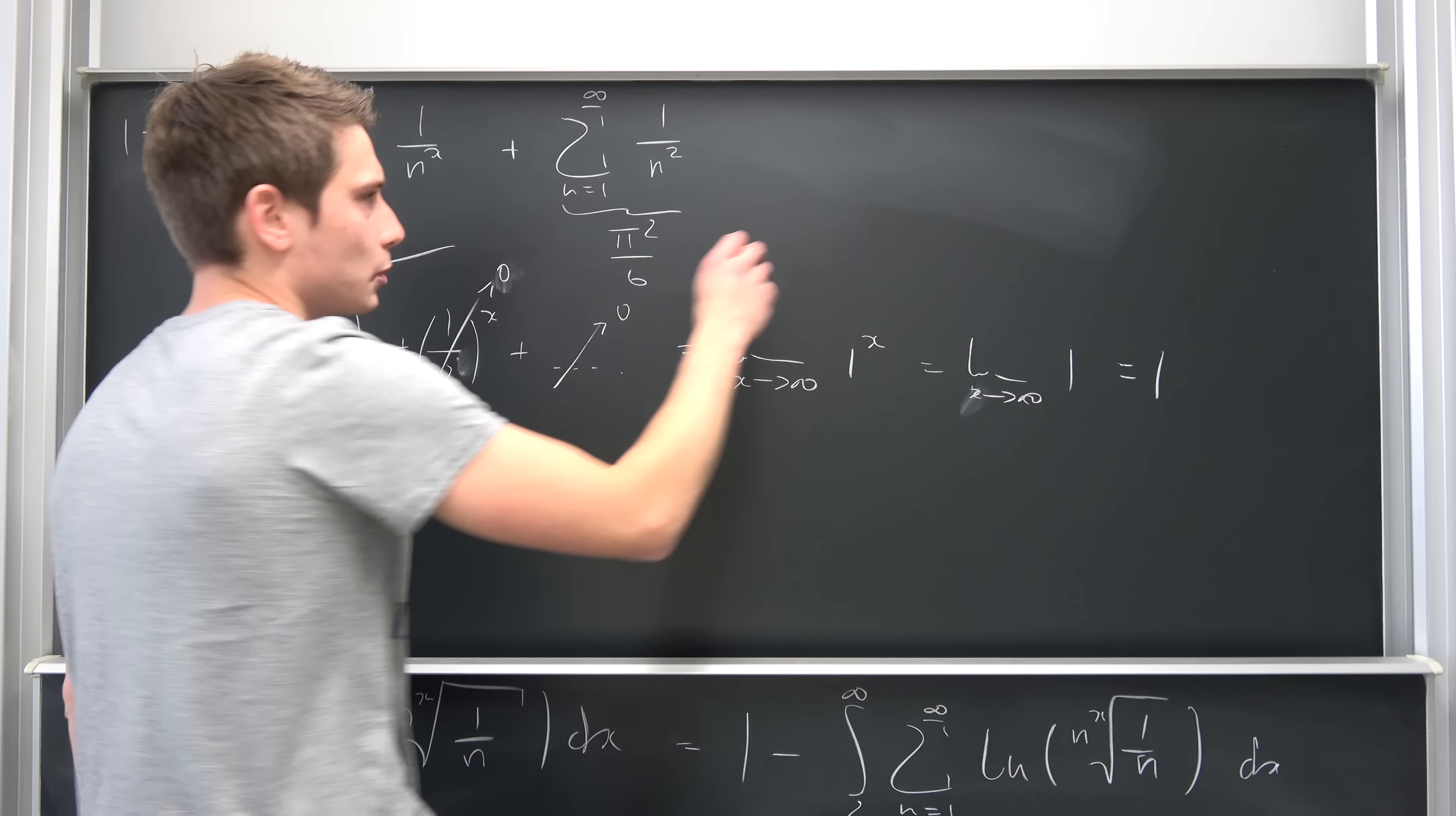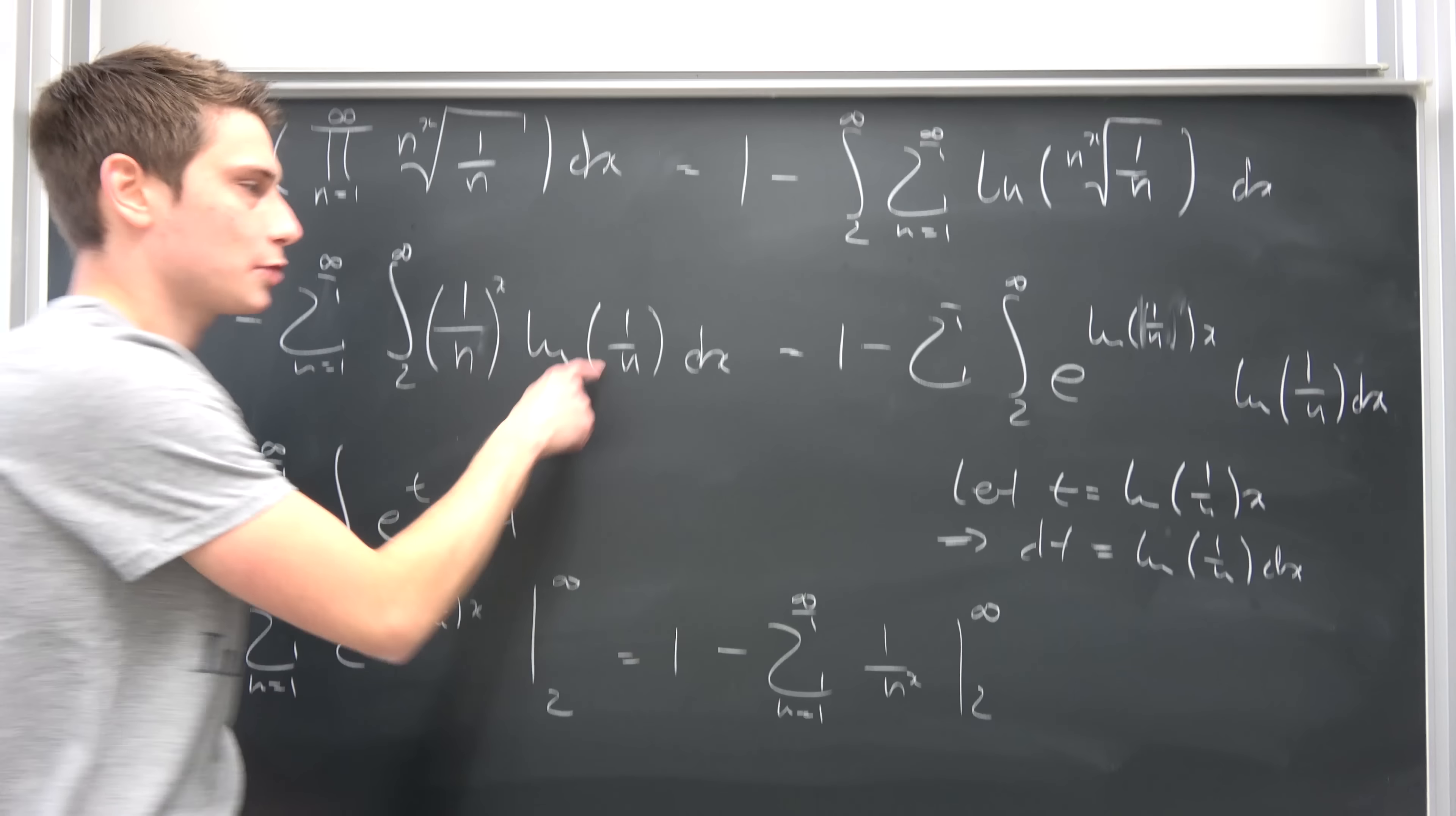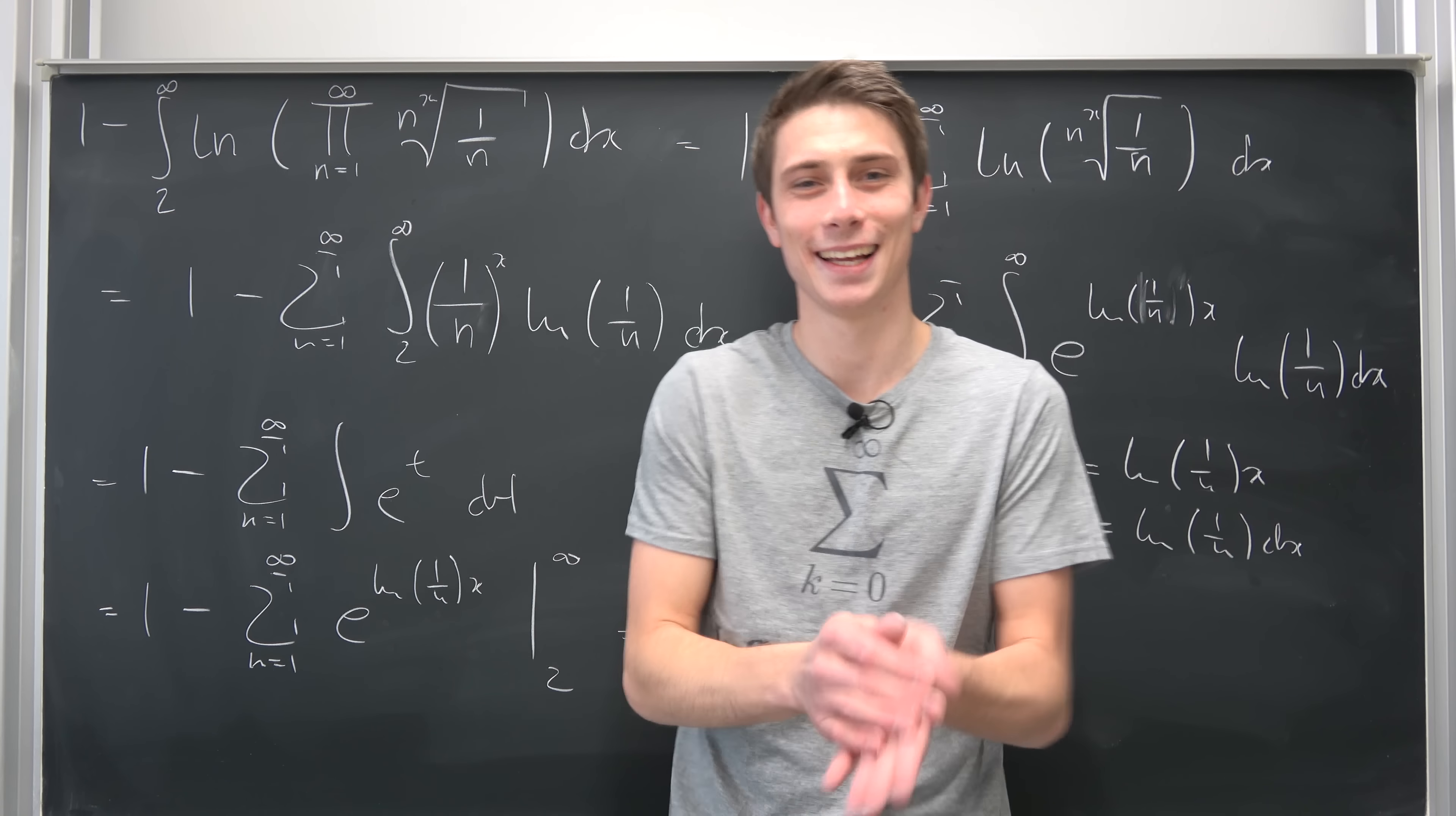In the end, we are going to get 1 minus 1 plus pi squared over 6. 1 and 1 is going to cancel out to just pi squared over 6, and then we are done. QED whatsoever. Please tell me in the comments which theorem to use right here to interchange those limits.